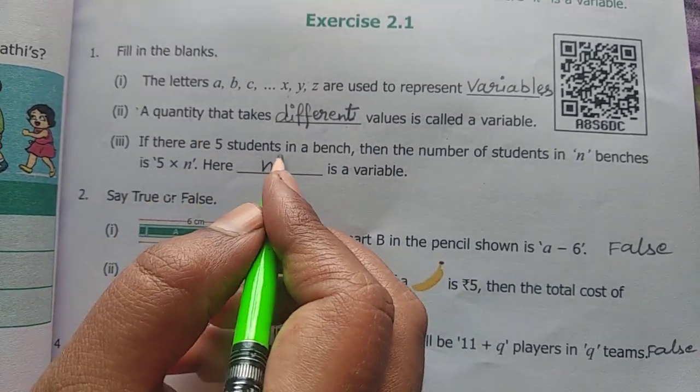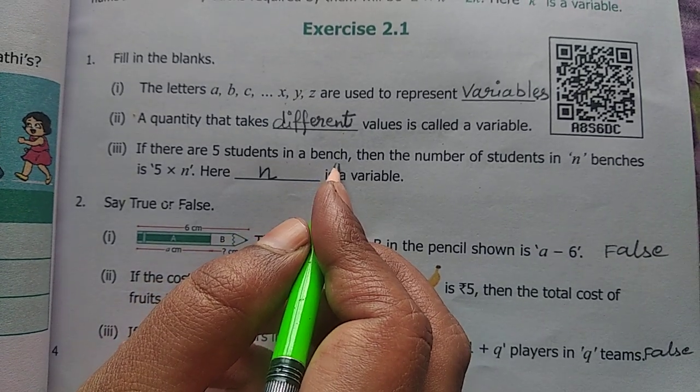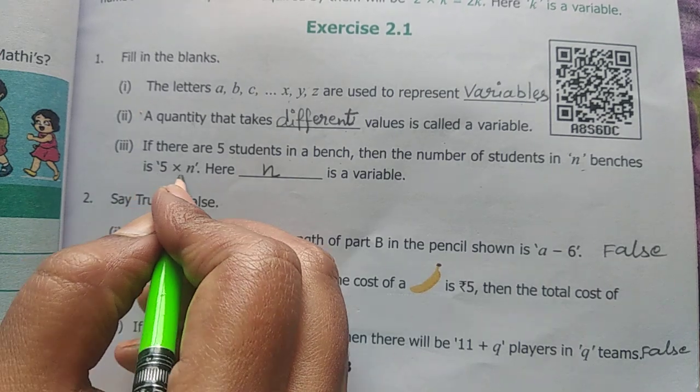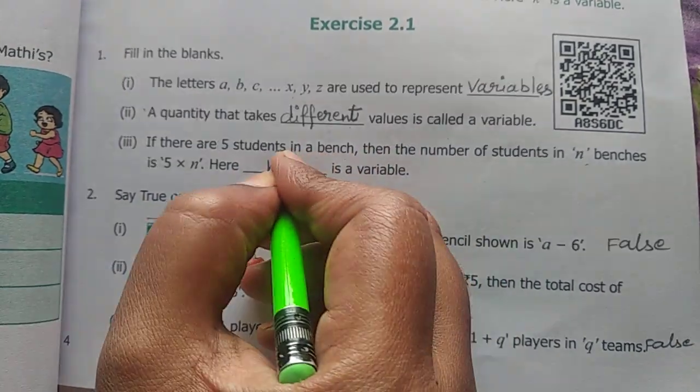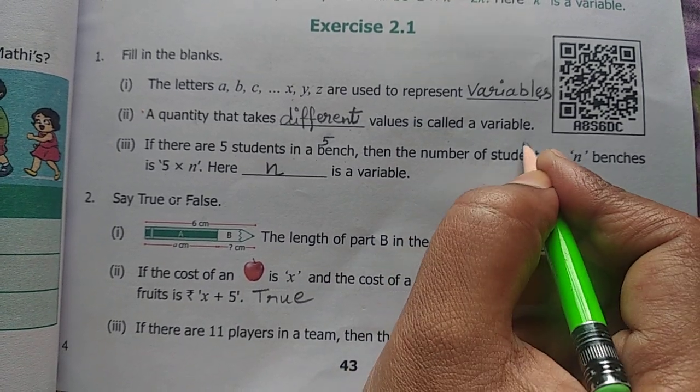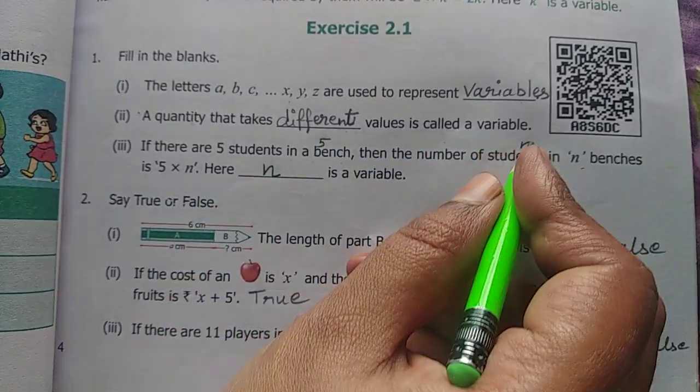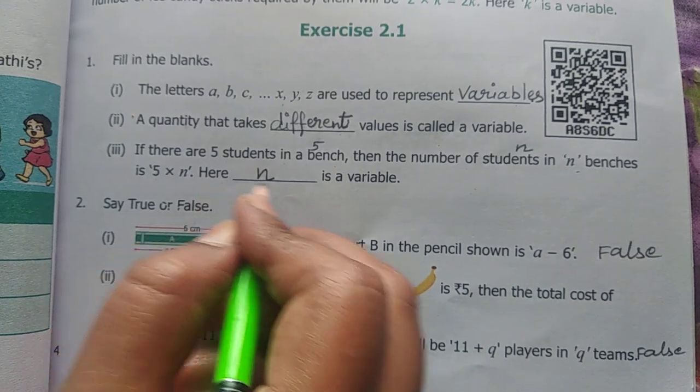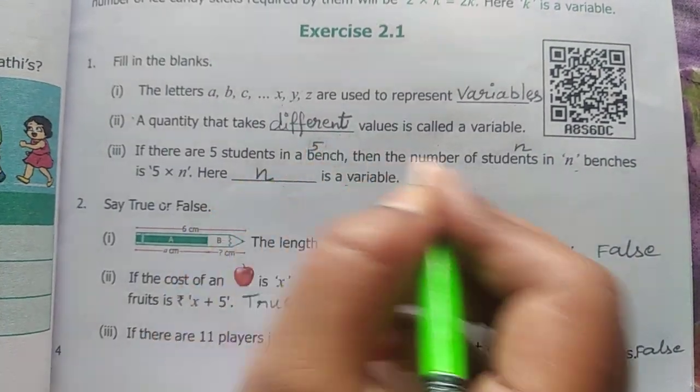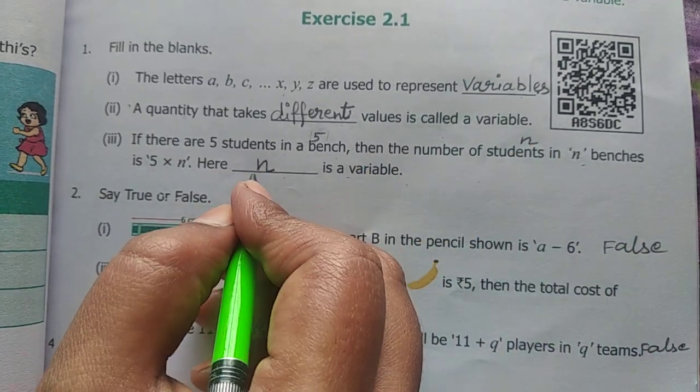If there are 5 students in a bench, then the number of students in n benches is 5 into n. Yippa aru, bench vandhu, students 5. Adhe yamari, number of students n mention mani yirukkangga. So 5 into n, yippa n here is a variable. Ithulay, 5 vandhu constant, n vandhu variable. So n is a variable.